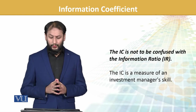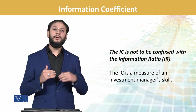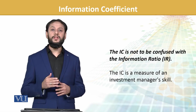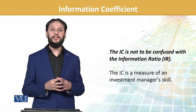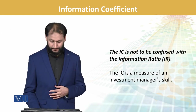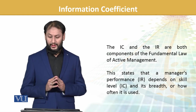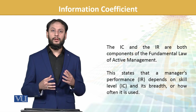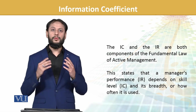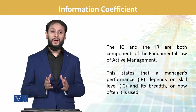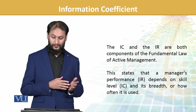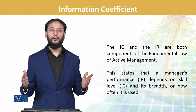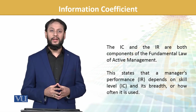Information coefficient is not to be confused with information ratio — information ratio se humne pehle baat ki thi ki humne kitna return kamaya, whereas information coefficient is more towards manager skill — uska apna jo skill set hai ya jo uski forecasting ability hai, wo kya hai. Information coefficient and information ratio are both components of the fundamental law of active management — dono ka active management mein hi use aa raha hai. This states that manager performance depends on skill, information coefficient, its breadth, and how often it is used.